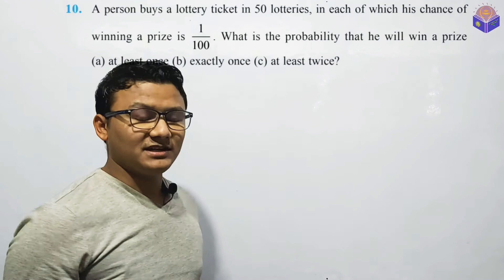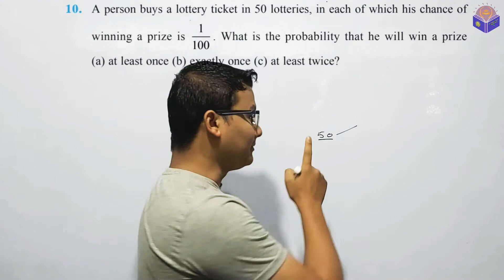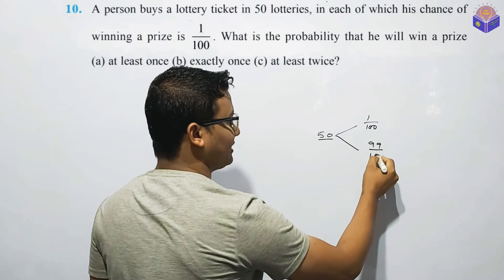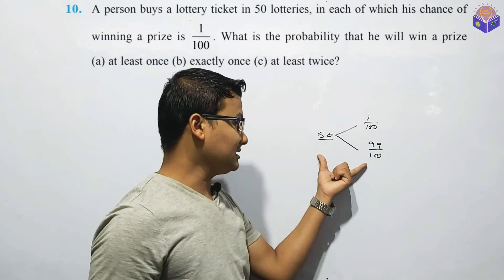There are lottery tickets available. There are 50 lottery tickets available. That is the only amount of money. It's like the amount of money — the probability is 1 by 100, so it is 99 by 100. If you have the chance of the probability of 100, it is 99 by 100.